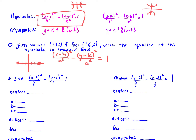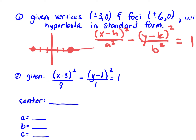Now let's plot our foci — that's at positive and negative 6. We need to know our a, b, c, and our h and k. So what's the center of our hyperbola? Our center is in the middle of our vertices. We have a vertex here and a vertex here, so the middle of those two is 0, 0. So our center is at 0, 0 — that's our h and our k.